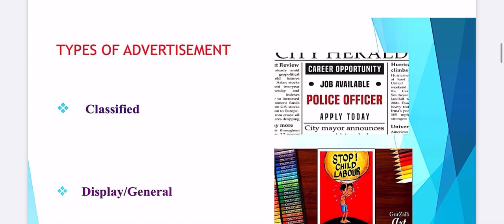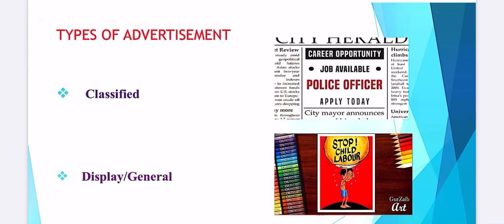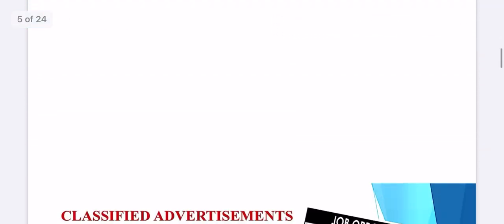In television also, in between programs you see so many advertisements. In your syllabus, there are two types of advertisements: one is classified and the other is display or general. Classified is a simple advertisement — situation vacant, situation wanted, matrimonial, missing, public notice. These are the forms we are going to study, along with display general. We will practice classified advertisement examples in today's session and in Wednesday's session as well.